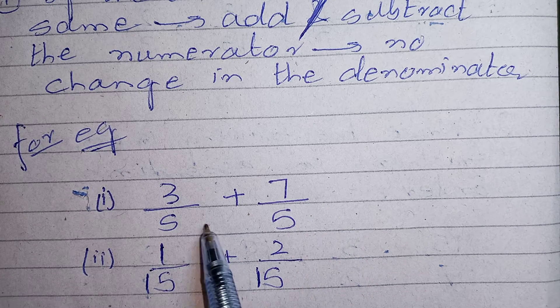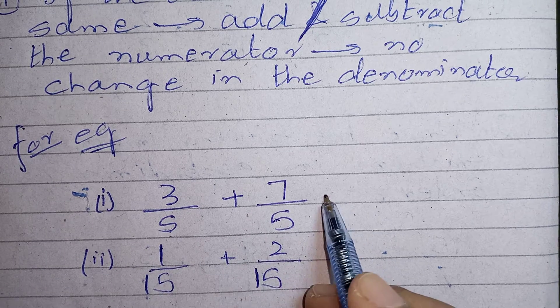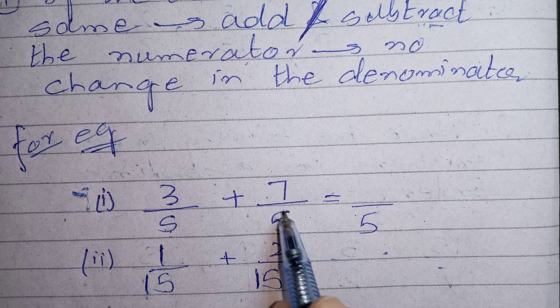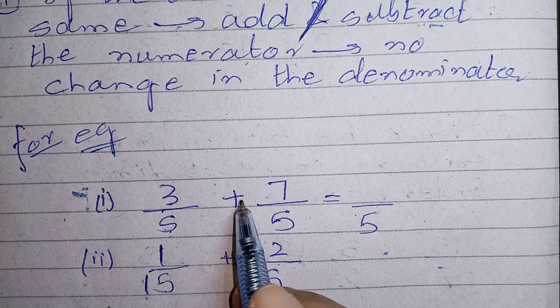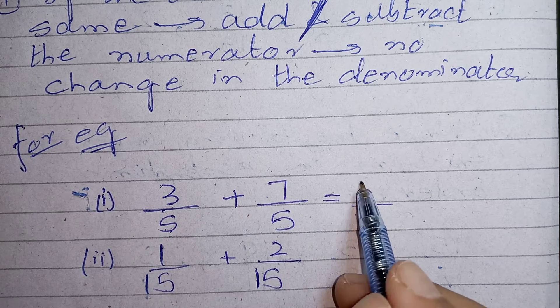In this question you are having 5 in both the fractions. So keeping the denominators same and add the numerators. What is 7 plus 3? 10.